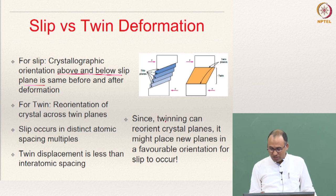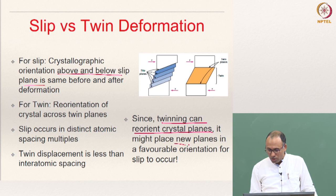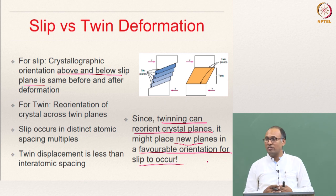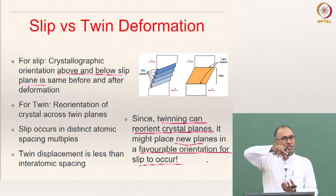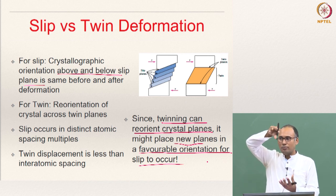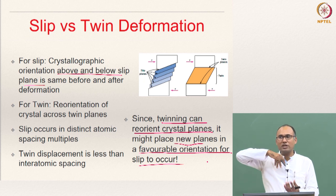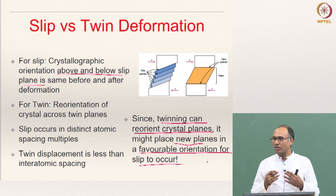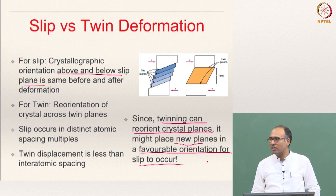Since twinning can reorient the crystal planes, it can place new planes in a favorable orientation for slip to occur. In some materials, deformation starts with twinning, but because twinning reorients the crystal planes, it may then trigger slip as a consequence of a higher Schmid factor on the reoriented slip systems.